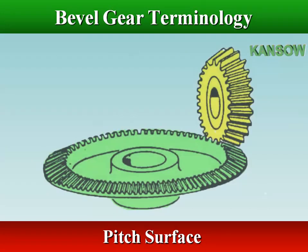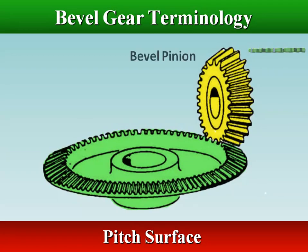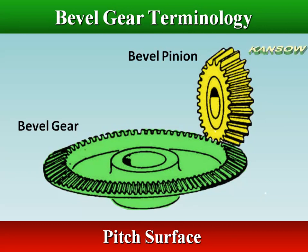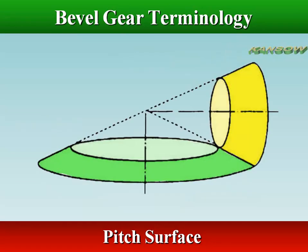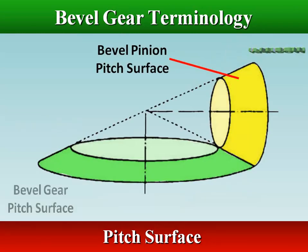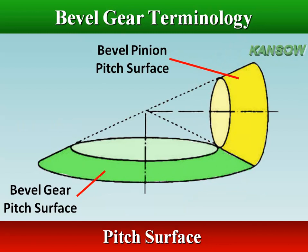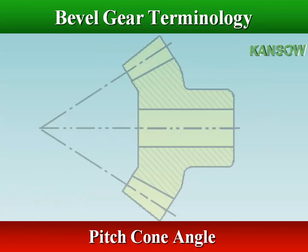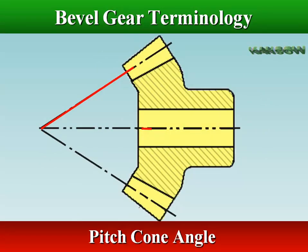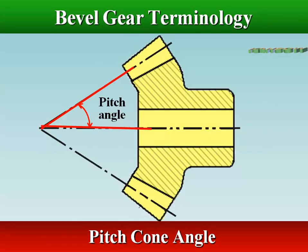The pitch surface of a bevel gear is cone-shaped. It is the imaginary toothless surface that would be created if you average the top lands, peaks, and bottom lands of the gear in cross-section. The pitch angle of a gear is the angle between the face of the pitch surface and the axis.